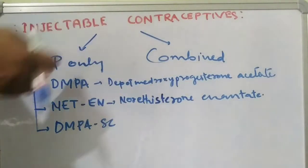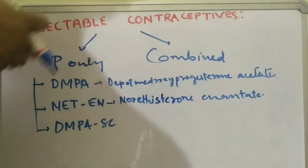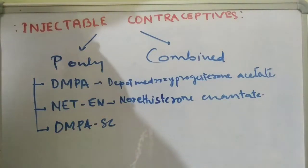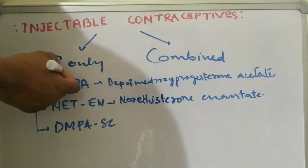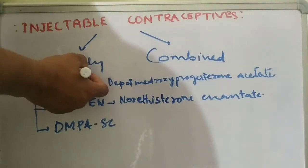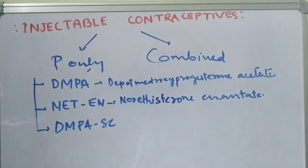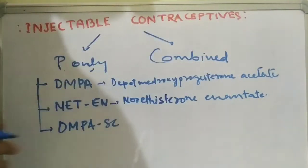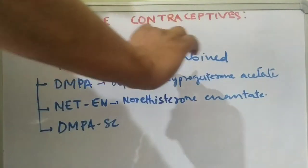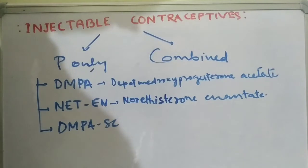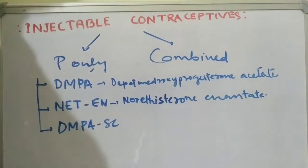Injectable contraceptives are basically divided into two types. The first type is progestogen-only. The second type is combined, where both estrogen and progesterone are combined. Progestogen-only has three different subtypes.